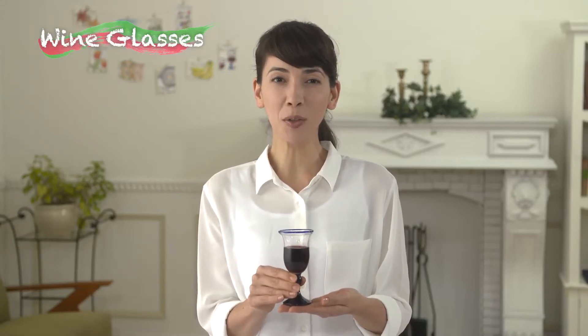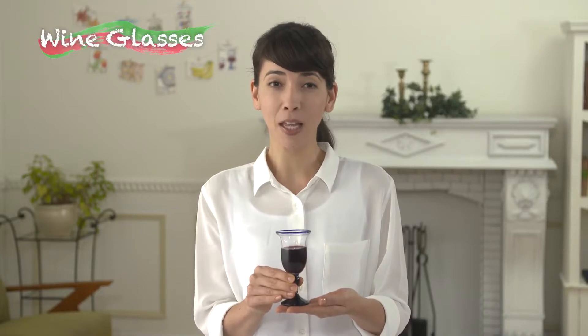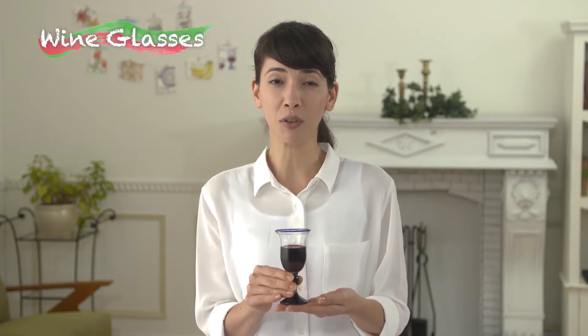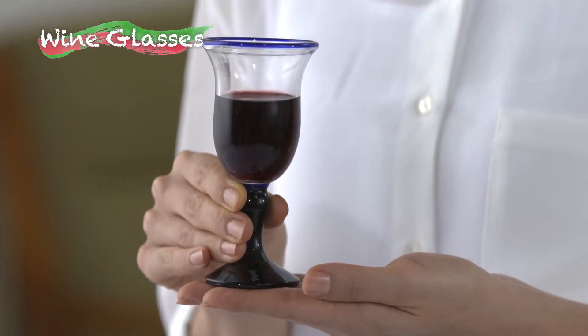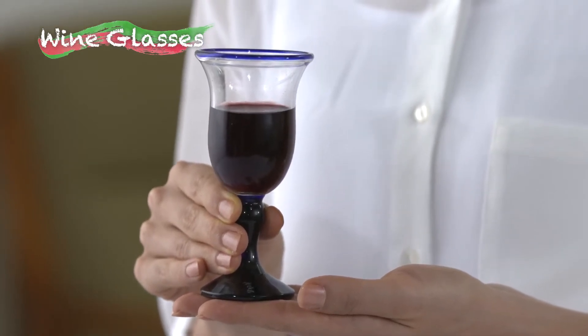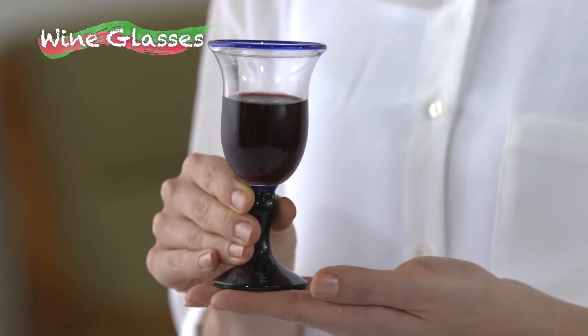This time, we'll draw a wine glass filled with red wine. To convey the transparency of the glass, we'll be using light colors. We'll bring out its shape by painting the wine held inside.